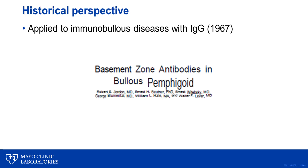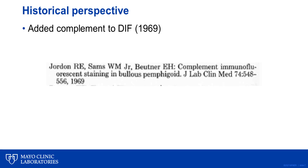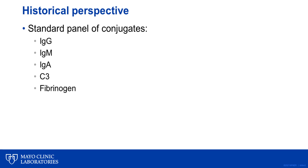Direct immunofluorescence was first applied to immunobullous diseases in dermatology in 1967, when it was recognized that bullous pemphigoid was associated with the linear deposition of IgG along the basement membrane zone. A few years later, it was recognized that the addition of complement, specifically C3, increased sensitivity for a diagnosis of bullous pemphigoid with direct immunofluorescence. Over time, the standard panel of conjugates expanded to include IgG, IgM, IgA, C3, and fibrinogen — a panel essentially unchanged for several decades at most institutions.